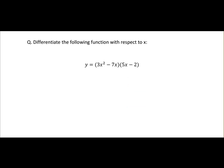So we'll take an example of that. Here we have a function which is the product of two functions. So you have 3x squared minus 7x, one function, multiplied by 5x minus 2, another function. Our first step is to identify u and v. So it's u multiplied by v. We'll take u as 3x squared minus 7x, and we'll take v as 5x minus 2.